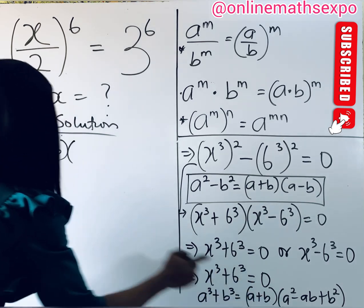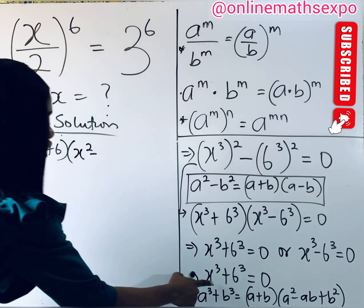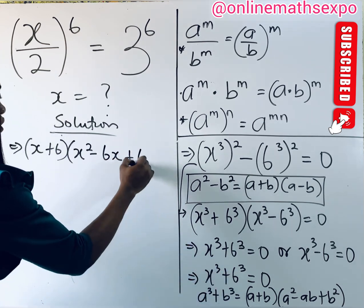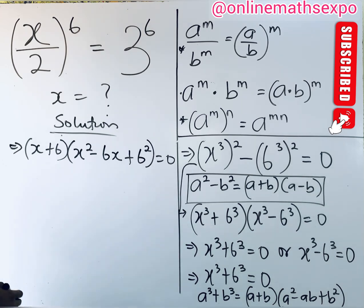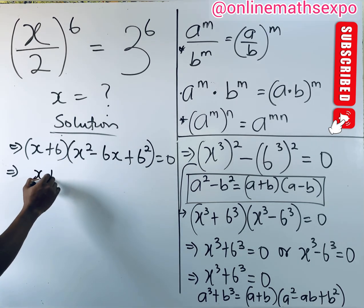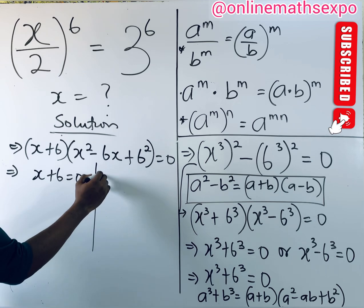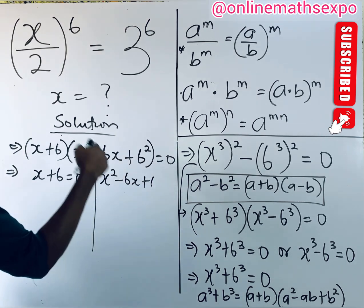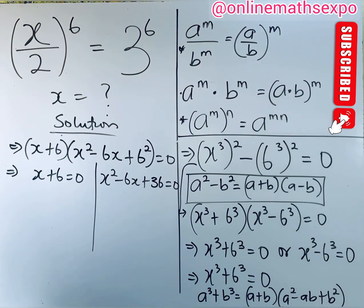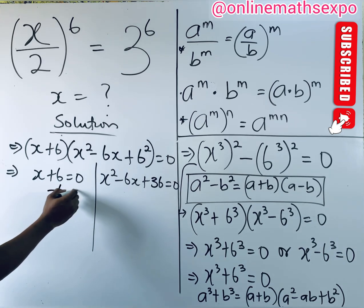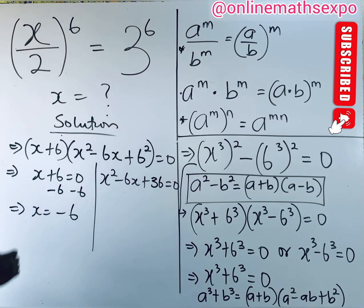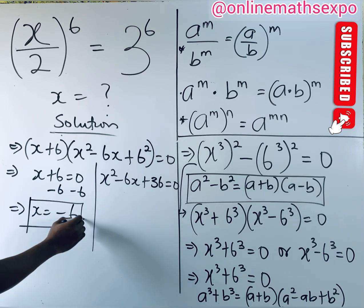So we have x² − 6x + 36 = 0, and either x + 6 = 0 or x² − 6x + 36 = 0. Solving x + 6 = 0: subtract 6 from both sides, giving x = −6. That's the first value of x. Now the quadratic x² − 6x + 36 = 0 has the highest power 2, so we use the quadratic formula.